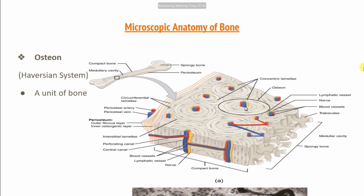This is the center of the Haversian system. What is the Haversian system? We have a canal here where you can see blood vessels, lymphatic vessels, and nerves present. So all the structures present in that area — we call that the Haversian system, and the canal where they are present we call the Haversian canal.